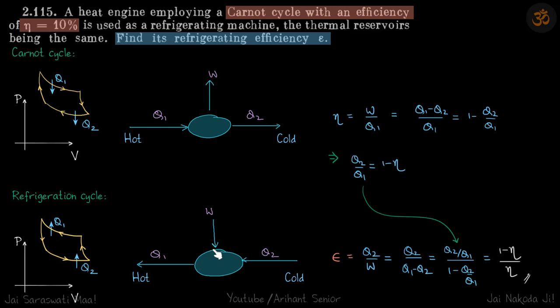The refrigerating efficiency for a refrigerating cycle is defined as Q2 by W: how much heat it can extract from the cold reservoir divided by work. Again, by the energy balance, W plus Q2 is Q1.